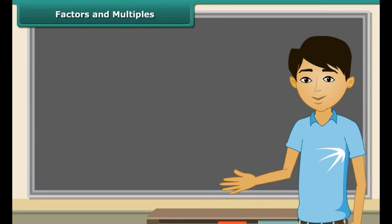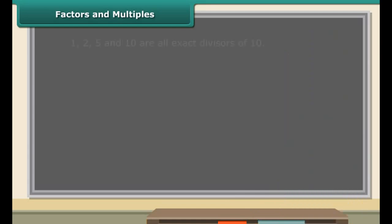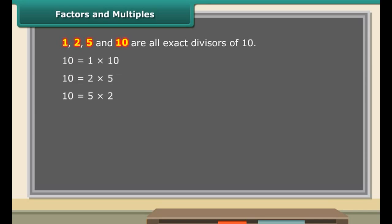A factor of a number is an exact divisor of that number. In other words, the factor of a number divides the number exactly. For example, numbers 1, 2, 5, and 10 are all exact divisors of 10. Therefore, 1, 2, 5, and 10 are factors of 10.